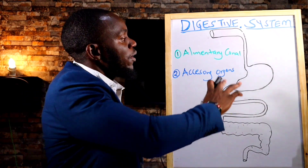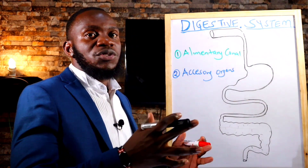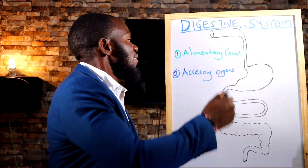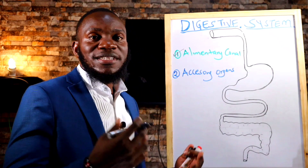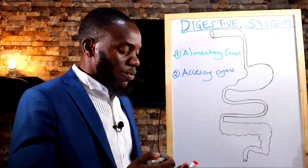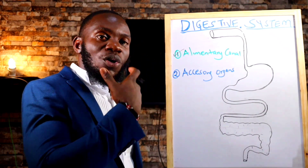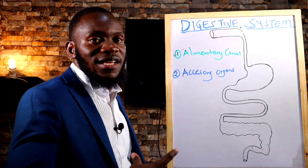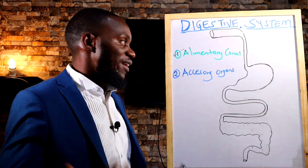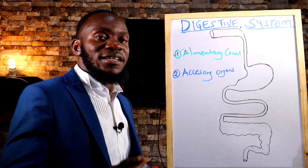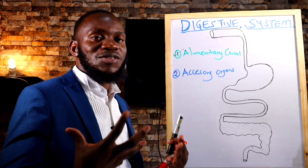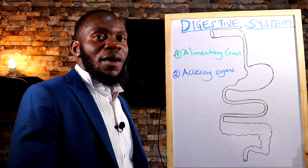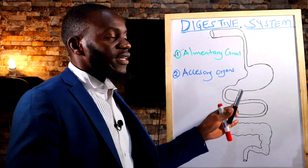In the digestive system we have two things involved. Number one, we have the alimentary canal. The alimentary canal is basically a hollow tube that runs from the mouth all the way and snakes through up to the anus. Then the other part is the accessory organs — all organs that are involved in digestion but are not part of the alimentary canal.